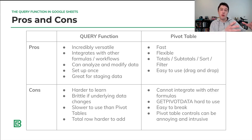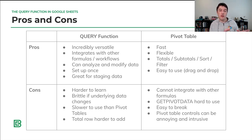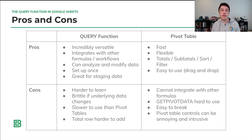So keep those in mind when thinking about the query function. It's great for workflows, use with other formulas, and data analysis. Not so good for quick exploration of your data. If you want to just dive into data and quickly figure out some summary tables, try the pivot table because it's really quick and really flexible. You can swap rows and columns very easily in the pivot table editor — it's a great tool for exploring your data.